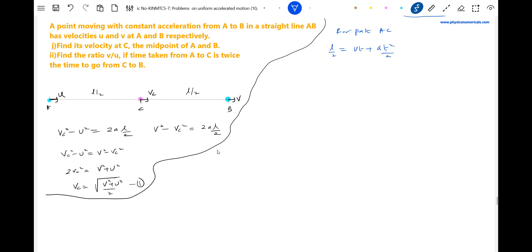Time taken from A to C is twice, so this will become 2t. And what is vc? vc should be equal to u plus a into 2t.